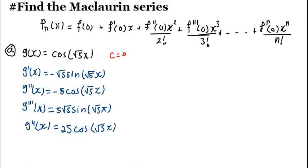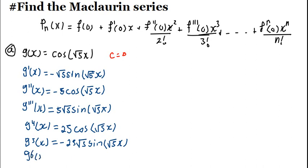The fifth derivative is going to be equals to minus 25√5·sin(√5·X). Then the sixth derivative is going to be minus 125·cos(√5·X). Just always remember to multiply by the derivative of the angle.